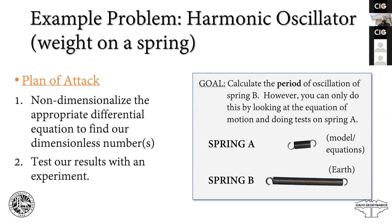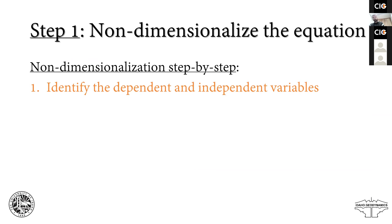So the students are going to use non-dimensional numbers to prove to themselves that non-dimensional numbers allow this prediction by capturing the physics of the problem. The first thing we'll do in class is non-dimensionalize the appropriate differential equation and rearrange the terms to find a dimensionless number. Then we find the value of that dimensionless number using an experiment where students put a mass on spring A, test the value of the non-dimensional period of oscillation, use that to calculate the value of the non-dimensional number, and predict the period of spring B.